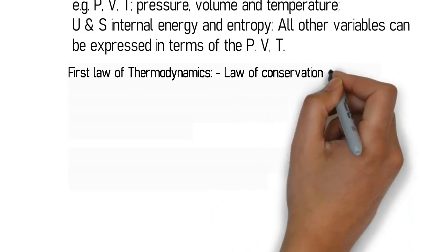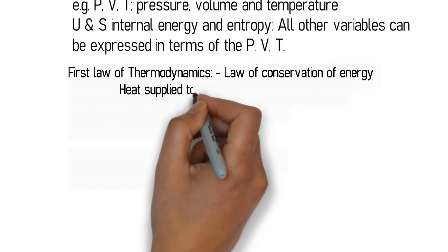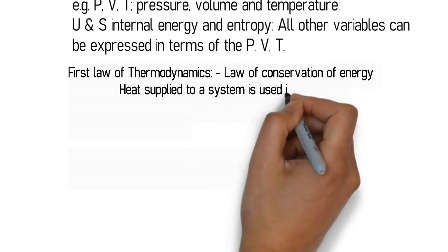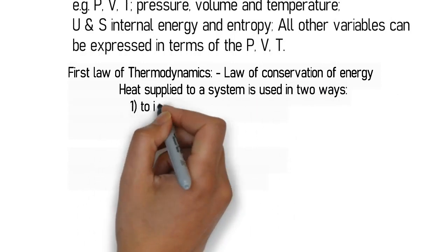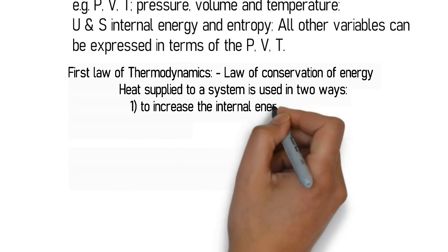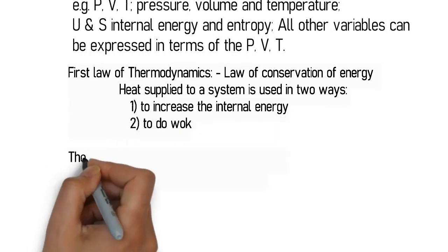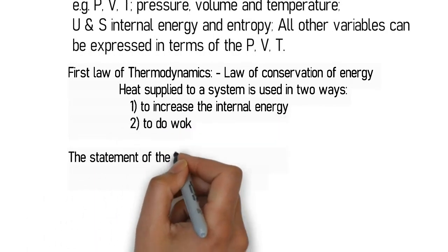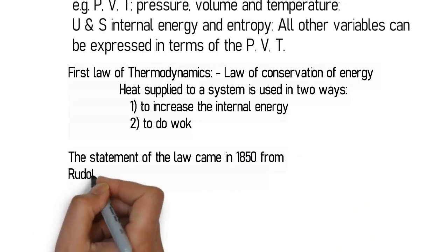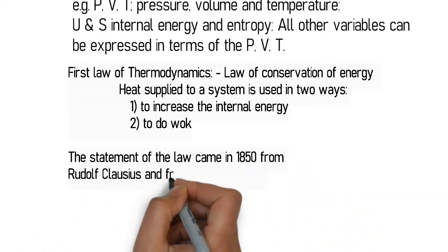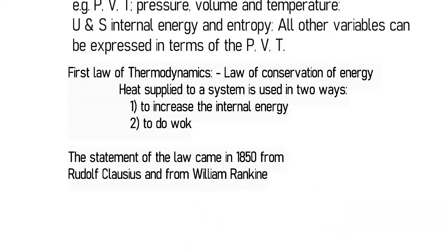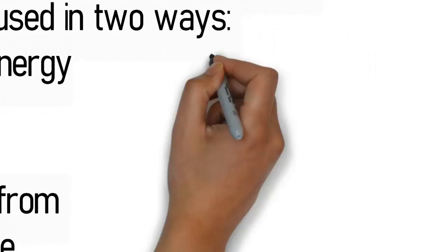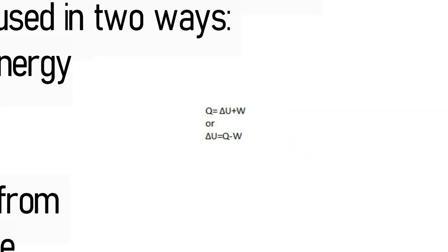The statement of the first law of thermodynamics — it is basically the law of conservation of energy, which states energy can neither be created nor destroyed but can be converted from one form to another. Heat supplied to a system is used in two ways: a part increases the internal energy and the other part does work. This statement came in 1850 from Rudolph Clausius and William Rankine.